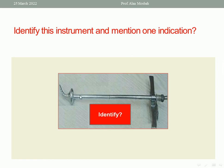Look at this picture please. This is a hysterosalpingogram cannula — metal cannula or olive cannula. This is used for performing hysterosalpingogram (HSG) to identify tubal patency in cases of infertility. Also, HSG can identify intracavitary lesions inside the uterus, like submucosal myoma, endometrial polyp, and Asherman syndrome.